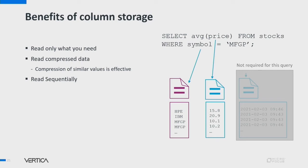Vertica takes the set of rows in the table, sorts them, and then breaks them out into columns. Each column gets stored in a separate file, and before writing that file to disk, we compress all the data in that file. For our example query computing average price, we never need to read the time column — so we just never open that file. An additional benefit of columnar storage is that compression of similar values is very effective. Each file contains the same kind of data — for example, the symbol file contains only varchars, and the price file contains only floats. We also read compressed data sequentially off disk, which is more performant for both solid-state and spinning disk drives.